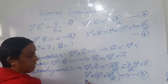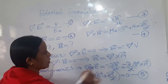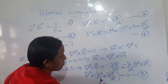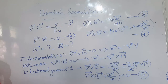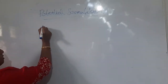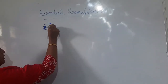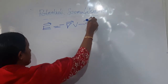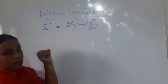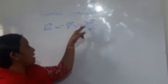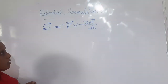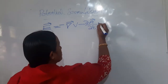Since the curl of a vector quantity equals zero, that quantity must be the gradient of some scalar function. Therefore, E + ∂A/∂t = -∇V, which gives us the electric field for the general electrodynamic case: E = -∇V - ∂A/∂t. This is equation 6. The electric field is given by the gradient of the scalar potential V and the time derivative of the vector potential A.